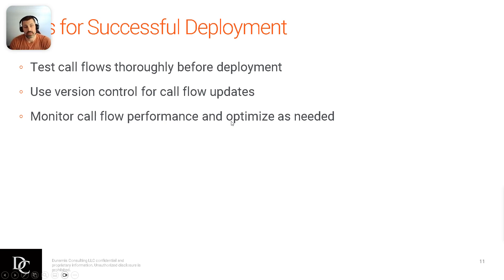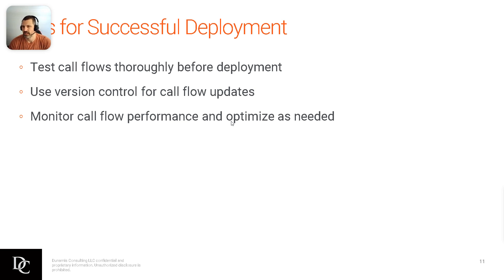Tips for successful deployment: test call flows thoroughly before deployment — that's on almost every slide, and it's very important. Version control for call flow updates: if something happens and a published call flow has an issue, don't freak out — you can go back, click on the version you just came from, export it, reimport it to prod, and publish. It probably takes five minutes and you're back up and running on the older, more stable version. And always, always monitor call flow performance and optimize as needed. It's almost like continuing your education — in the fast-changing world of tech and software, you need to optimize yourself and keep those call flows optimized too.